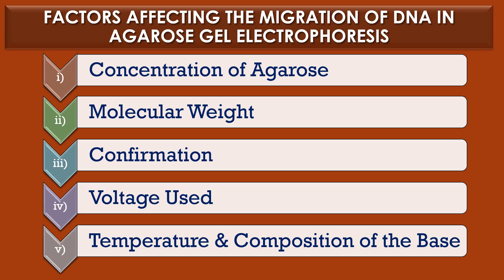Factors affecting the migration of nucleic acids in agarose. Different critical parameters primarily determine the rate of nucleic acid migration in agarose gels. They are: concentration of agarose, molecular weight, conformation, voltage used, temperature, and composition of the buffer. The first factor is concentration of agarose — lower molecular weight DNA and RNA fragments are separated using higher concentration gels and vice versa. The second factor is molecular weight — the migration rate of duplex DNA fragments is inversely proportional to the log of molecular weight.